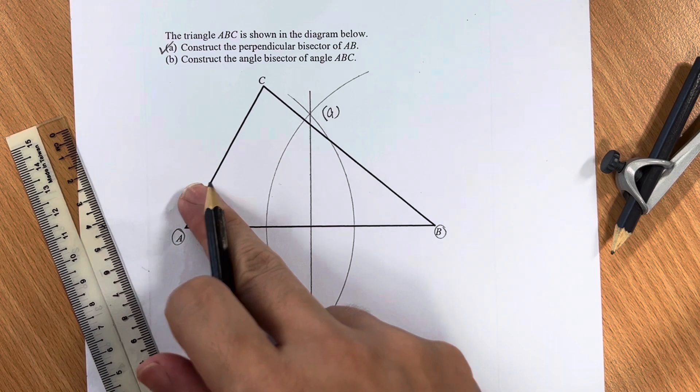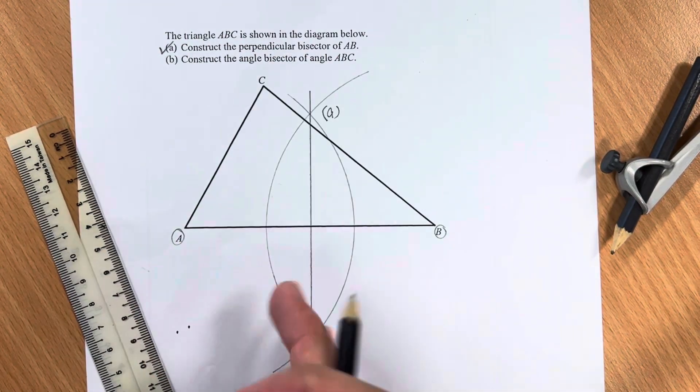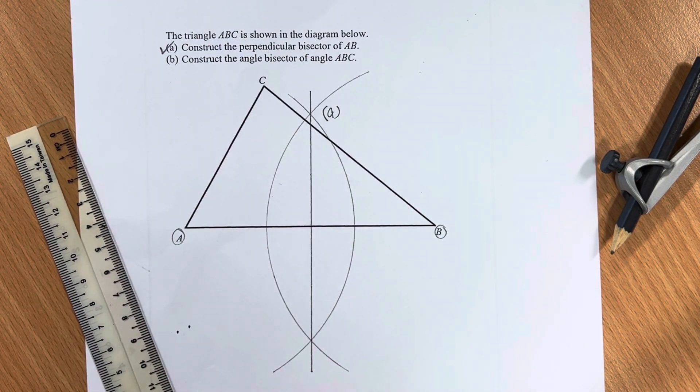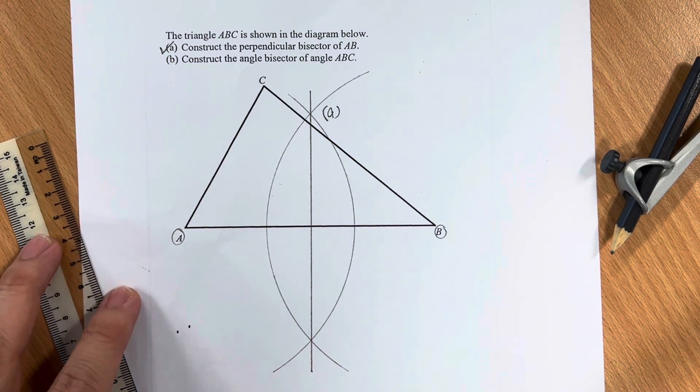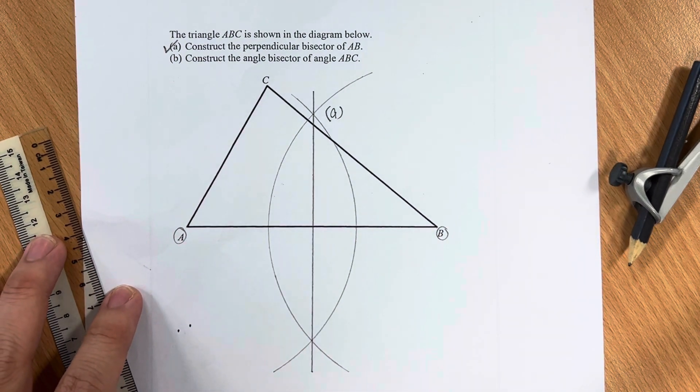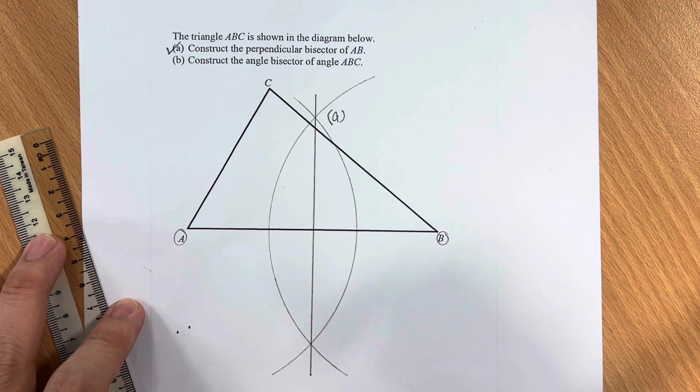This line is 90 degrees perpendicular to line AB, and it bisects the line AB, meaning it cuts line AB into two equal parts.